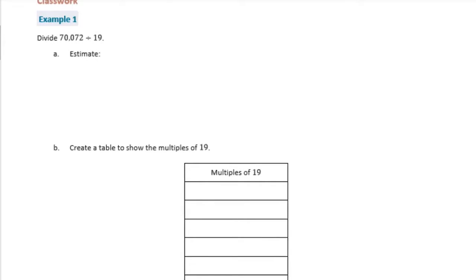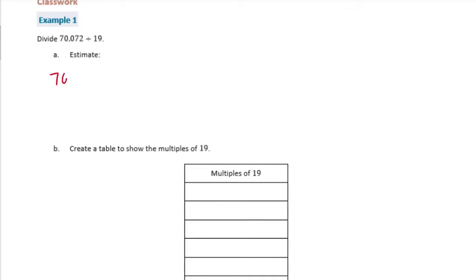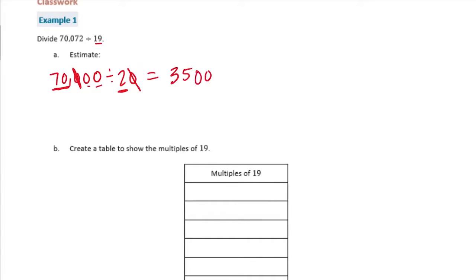Divide 70,072 divided by 19. We're going to start with an estimate. I'm going to round 70,072 to 70,000 and 19 I'll round to 20. So I can do 70 divided by 2, and that is 35. I'm going to cancel out two zeros and I have one 2 left. So my estimate is 3,500.